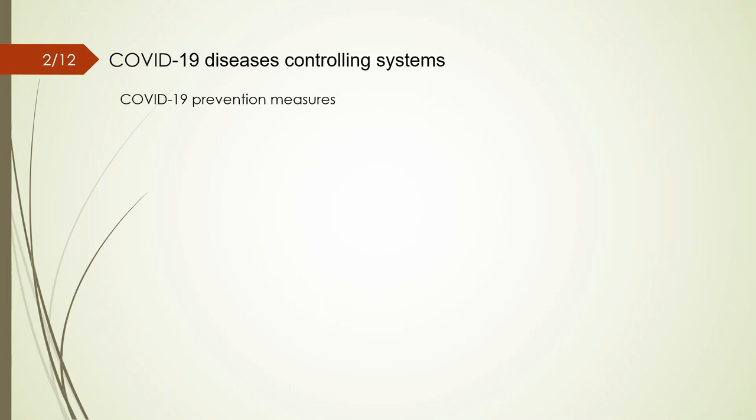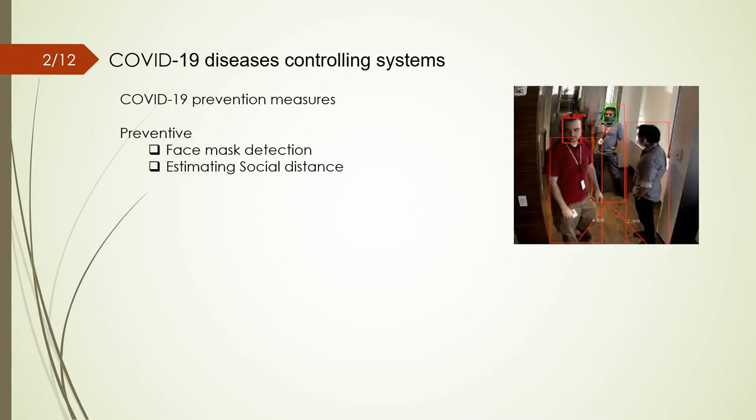After the outbreak of the COVID-19 pandemic, various smart systems were developed to control its spread. Wearing a face mask and maintaining social distancing are two essential preventive measures for controlling this disease. So it's helpful to develop monitoring systems that determine the observation status of these two protocols.